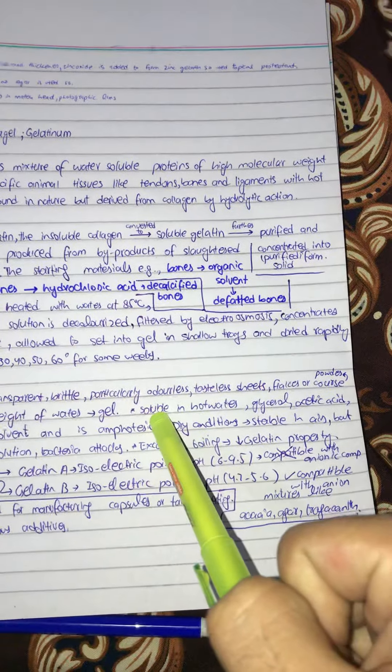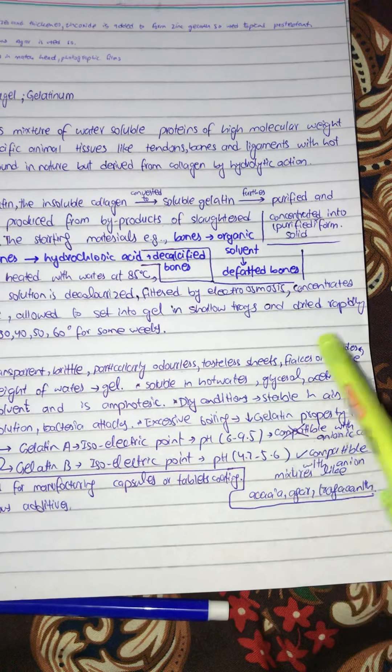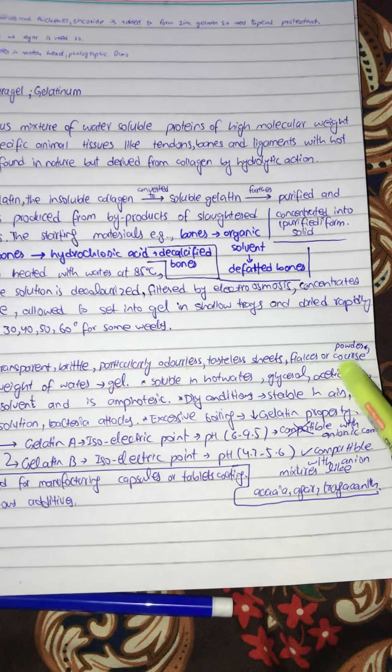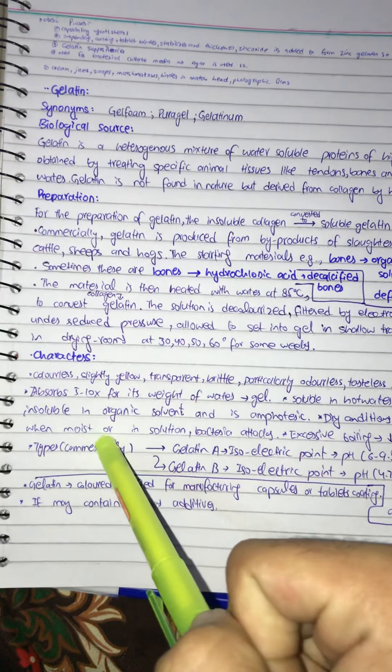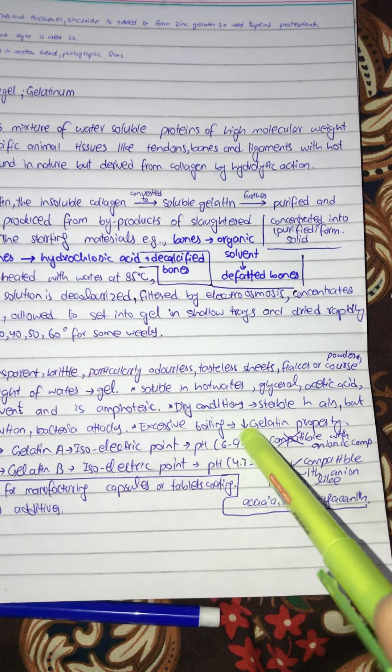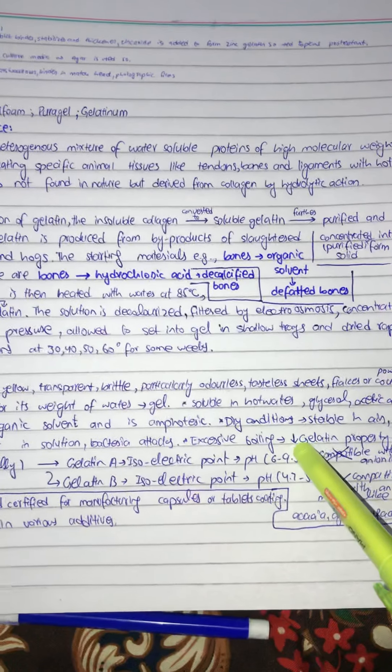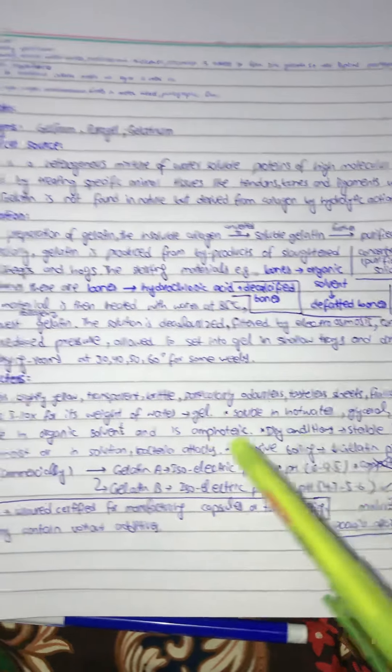It is soluble in hot water, glycerol, acetic acid, and insoluble in organic solvents. It is amphoteric. In dry conditions, gelatin is stabilized in air, but when there is moisture, temperature, or bacteria attacks, or excessive boiling, it can lead to less gelatin property or can completely destroy it.